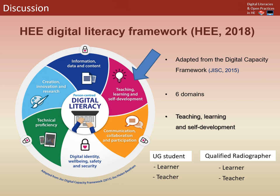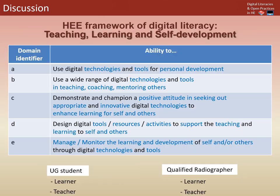It also relates well to radiography because students will often be exposed to teaching, learning and self-development during their three-year programme. But after the programme, they will also be exposed to these three elements as a qualified radiographer. Here is the table which I've created using information from the 2018 HEE framework. This second domain has been split up into five sections: A, B, C, D and E. Although these are still more towards a qualified radiographer, it's important that we help students build upon their digital literacies so they become able by the end of year three.